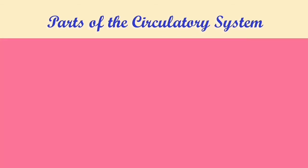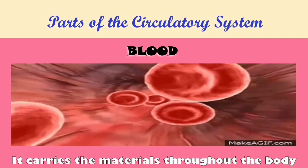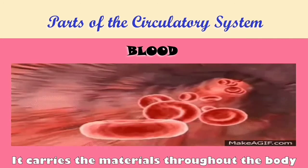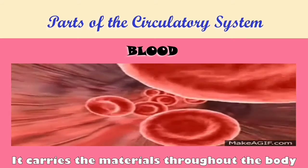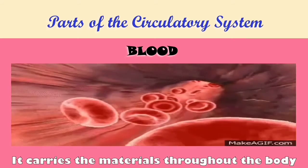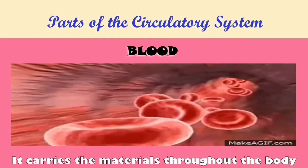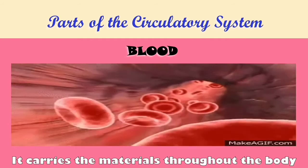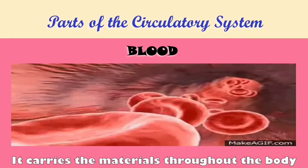The last major part of the circulatory system is the blood, or red blood cells. Blood carries materials throughout the body. So those are the major parts of the circulatory system: the heart, the blood vessels, and the blood.